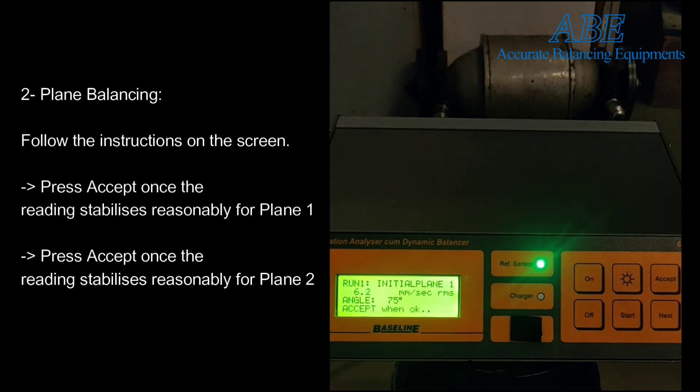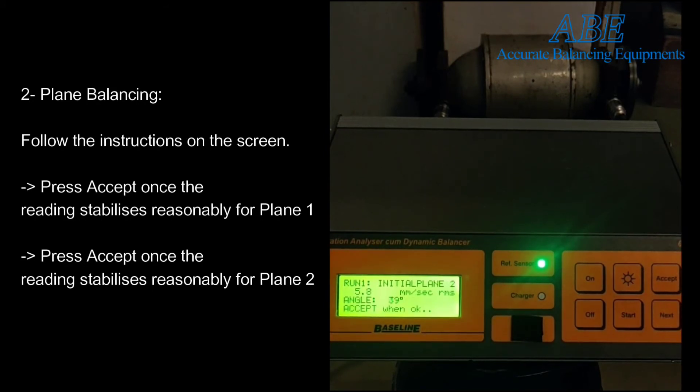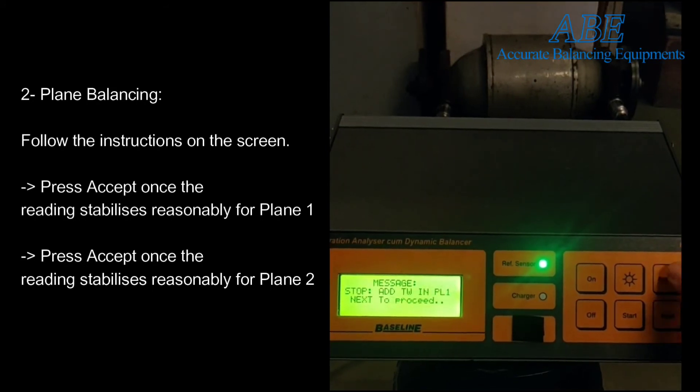After setting up the rotor, follow the instructions on the screen which will lead you to take the initial vector readings in plane 1 and then in plane 2. After that, stop the rotor and add the trial weight in plane 1.